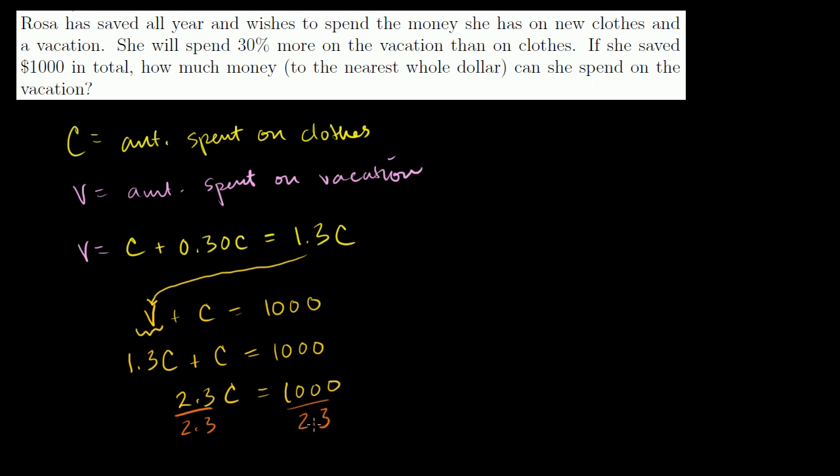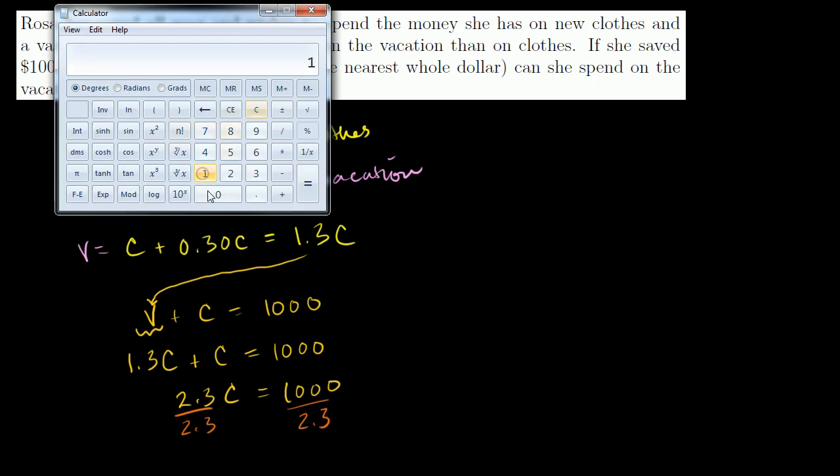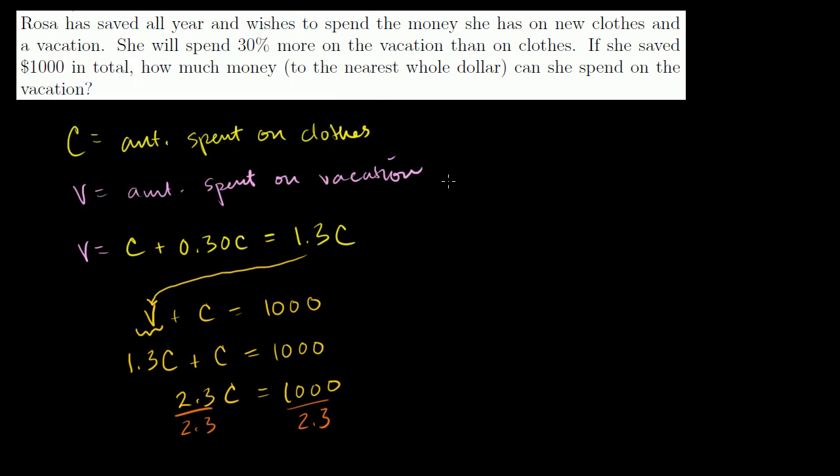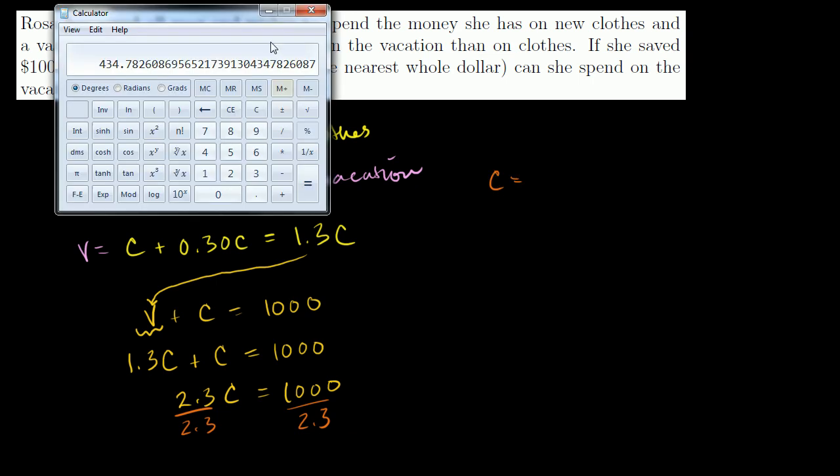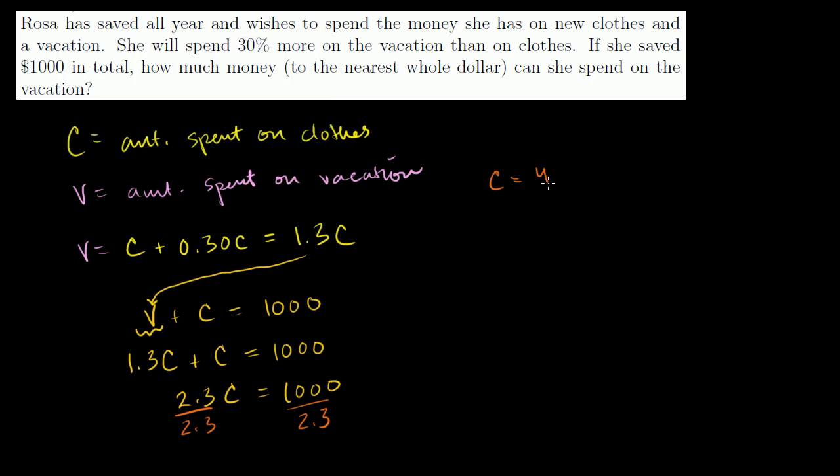I'll get the calculator out for this one. So we have 1,000 divided by 2.3 is equal to $434.78. So C is equal to $434.78.